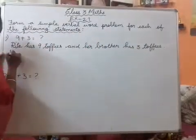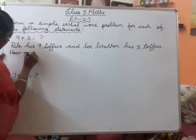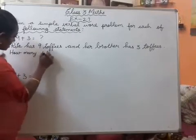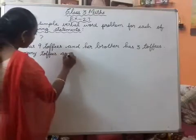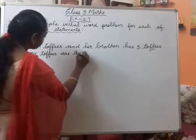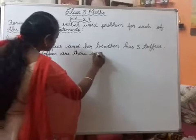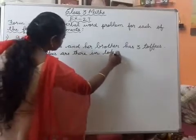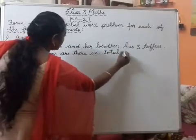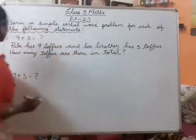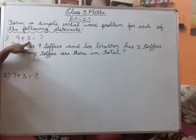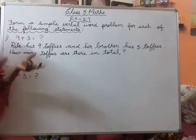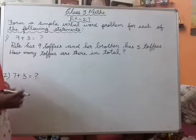How many toffees are there in total? Okay, so 9 and 3, what do you have to do? One word problem, story, addition story, you have to frame. Simple,